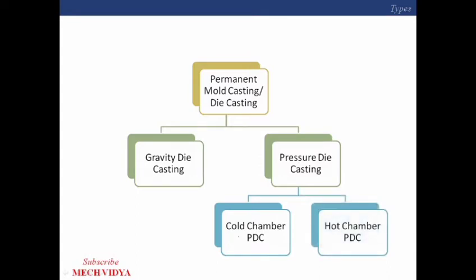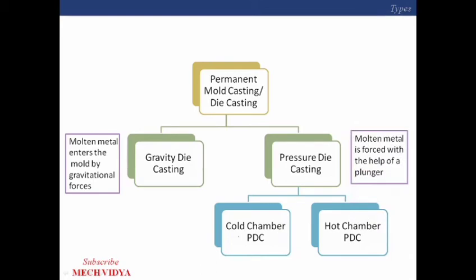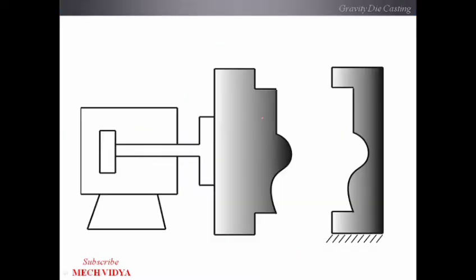What separates gravity die casting from pressure die casting is that in gravity die casting, the molten metal enters the mold cavity by gravitational force — no pressure or other external forces are applied. Whereas in pressure die casting, the molten metal is forced with the help of a plunger or ram, which squeezes the molten metal into the mold cavities.